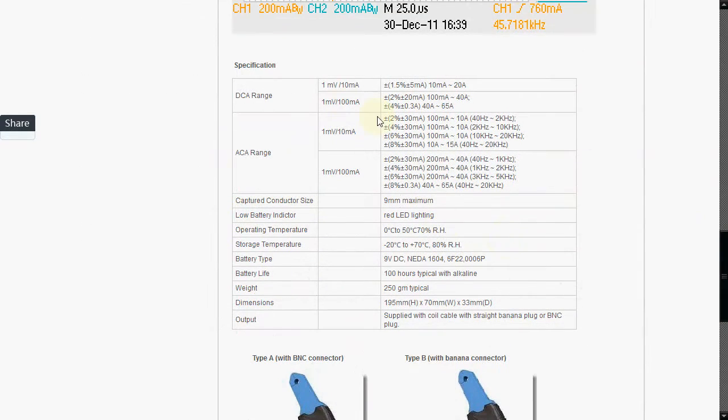And also you can see these specs here. So they've got specs for the DC amp range, AC amp range, and depending on which selection switch, if you're in the 10mA range or the 100mA per mV range, it'll have different accuracy specifications.